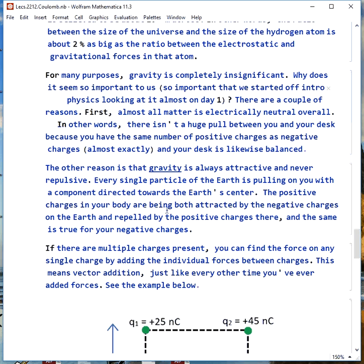One is almost all matter is electrically neutral overall. So there's not a huge pull between you and your desk because you have an equal number of positive and negative charges, and your desk does too. The other idea is gravity is always attractive and never repulsive. So every single particle of the Earth is pulling on you with a component directed towards the Earth's center. The positive charges in your body are being attracted by the Earth's negative charges, but they're being repelled by the Earth's positive charges.